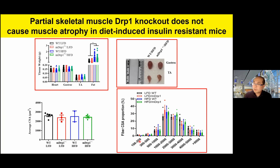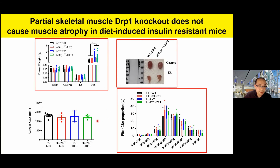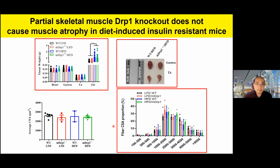We also wanted to check whether DRP1 partial knockout causes any muscle damage, since homozygous knockout is associated with muscle atrophy. Looking at muscle mass, morphology, and fiber cross-sectional area distribution, we found no changes — indicating no negative impact on muscle quality or muscle atrophy from partial DRP1 knockout.